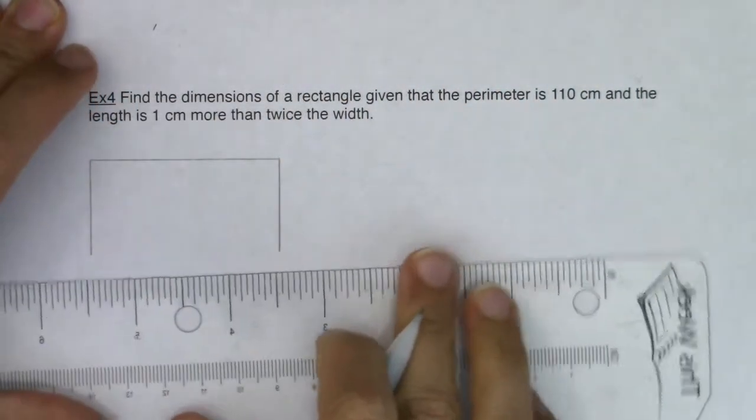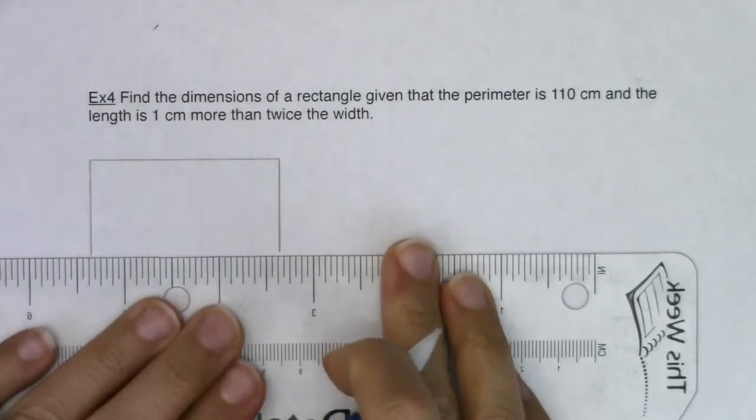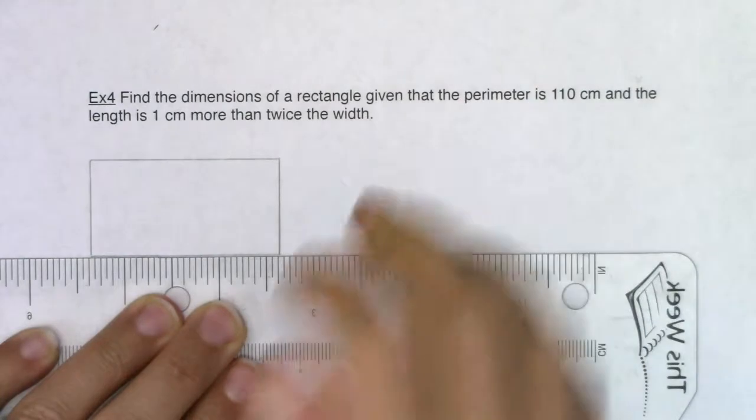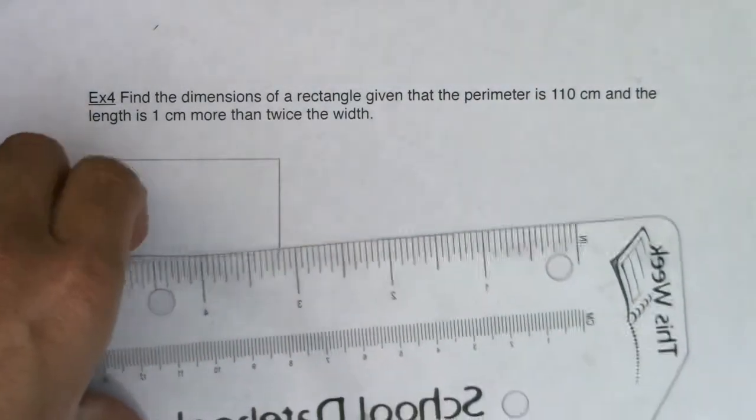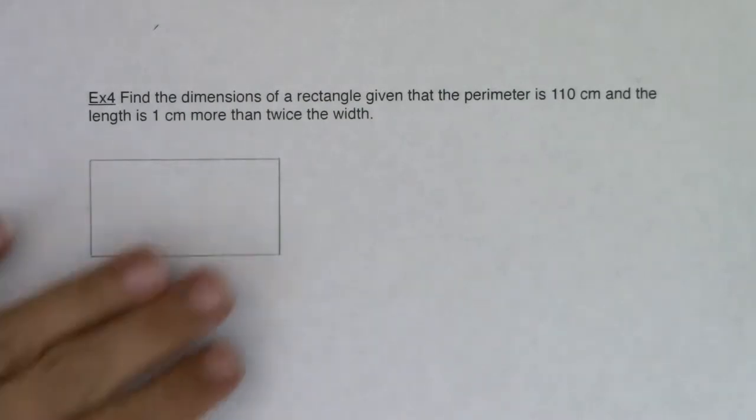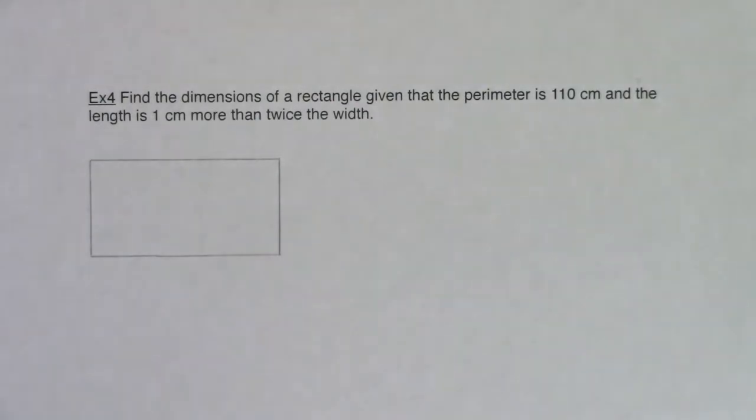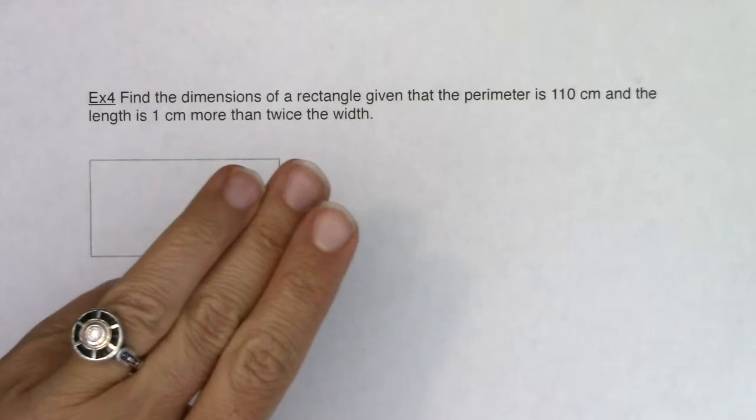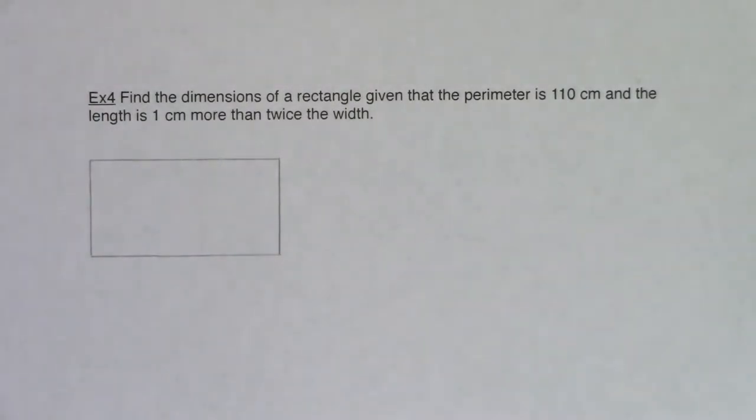When it comes to rectangles, there's usually four pieces of information or four aspects that a word problem will talk about: the length of the rectangle, the width of the rectangle, the area, and the perimeter. Which is not to say that all four of those are in every problem. It's just to say that some of them are in there.